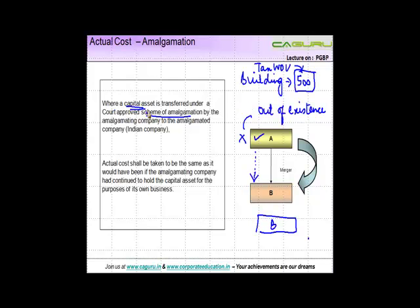asset - again, it's applicable only to the transfer of a capital asset - is transferred under a court-approved scheme of amalgamation by the amalgamating company. In this case, the amalgamating company is company A, the company which goes out of existence, to